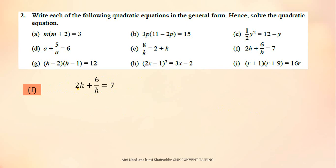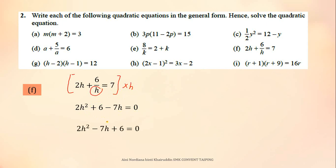For question F, multiply all terms by H since there is a denominator H. The result is not yet in general form, so rearrange the equation into general form, then factorize. The values of K are negative 2 and 2.